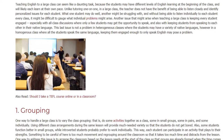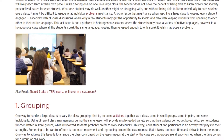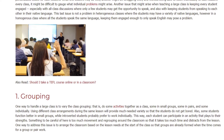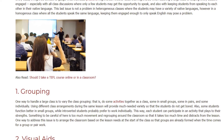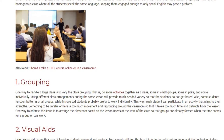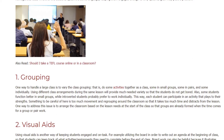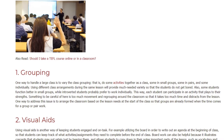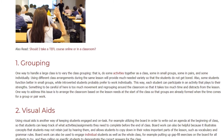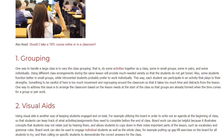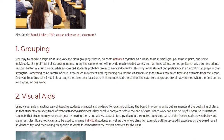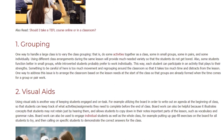One way to handle a large class is to vary the class grouping — do some activities together as a class, some in small groups, some in pairs, and some individually. Using different class arrangements during the same lesson provides variety so students do not get bored. Some students function better in small groups while introverted students prefer to work individually. Be careful of too much movement and regrouping, which can waste time. One solution is to arrange the classroom based on lesson needs at the start of class so groups are already formed when needed.